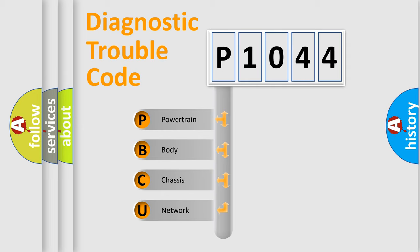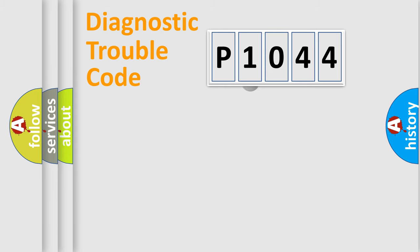We divide the electric system of automobile into four basic units: powertrain, body, chassis, and network. This distribution is defined in the first character code.